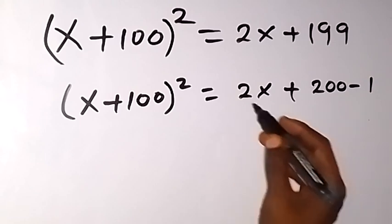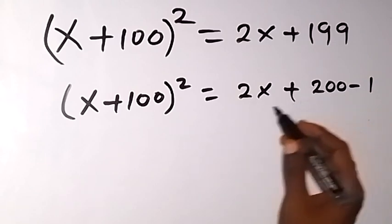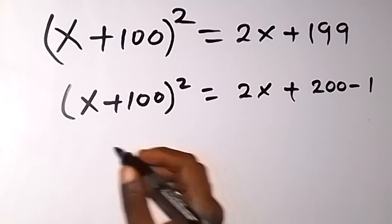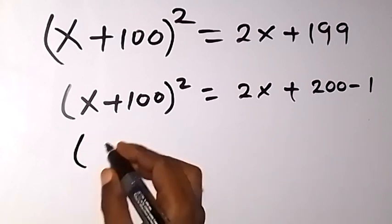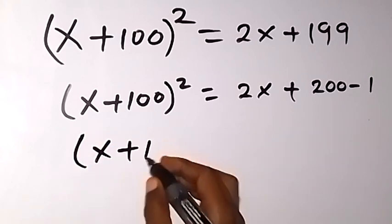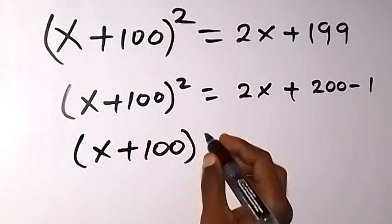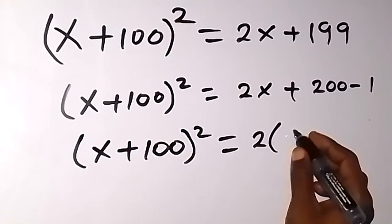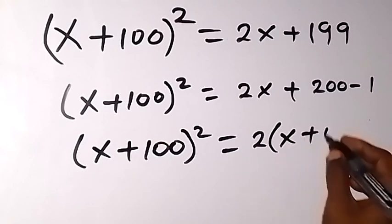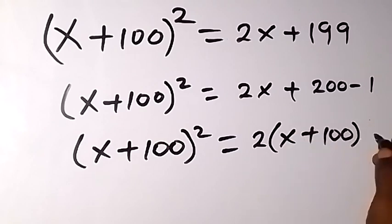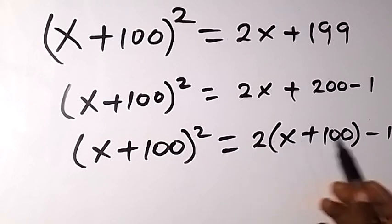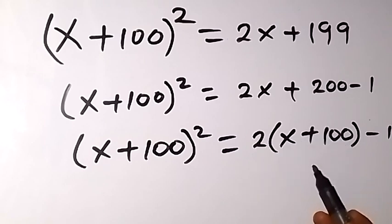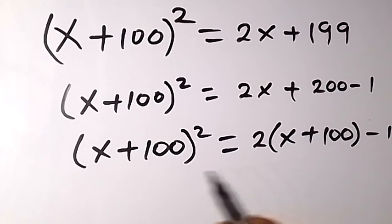From here we can factor 2 out from 2x and 200, so (x + 100)² equals 2 times (x + 100) minus 1. We factor these two out and we remain with x + 100 on each side.